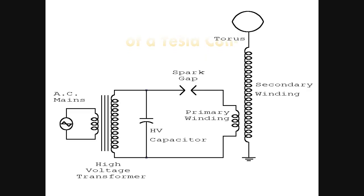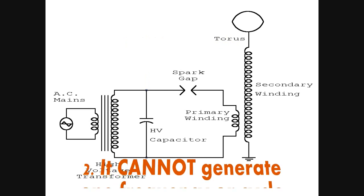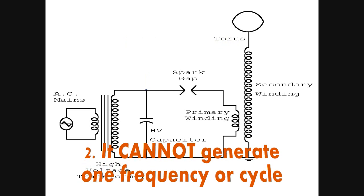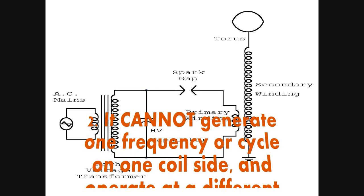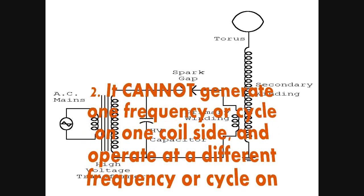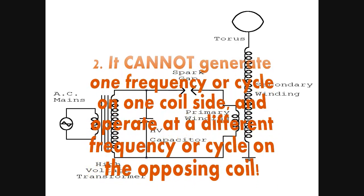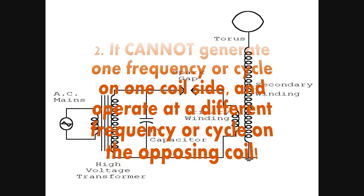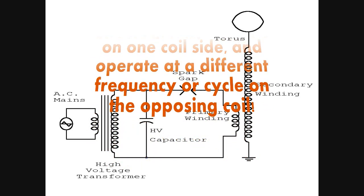It's actually drawing in that electricity. 2. It cannot generate one frequency or cycle on one coil side and operate at a different frequency or cycle on the opposing coil.